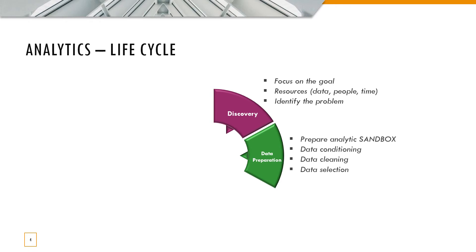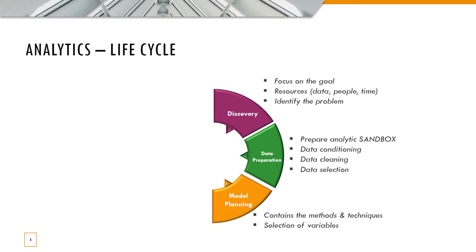The second phase is data preparation, where you condition your data through cleaning and selection. Once the raw data is curated, it is fed into the third phase: model planning. Model planning involves selecting methods and techniques such as ARIMA, and the selection of variables also happens in this phase.